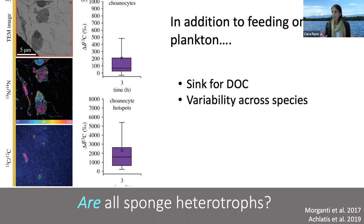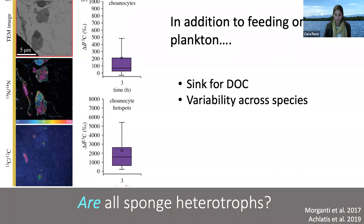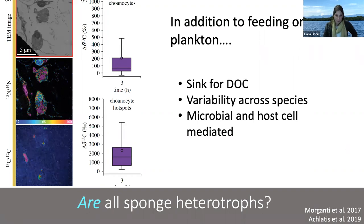This was really exciting because it tells us that there are more ways for sponges to access resources. We've got the plankton, we've got these dissolved nutrients, but we also see variability across species. So what does this all mean for resource limitation and biodiversity?